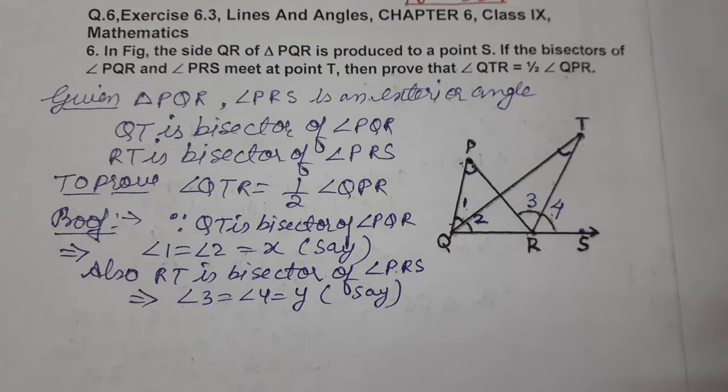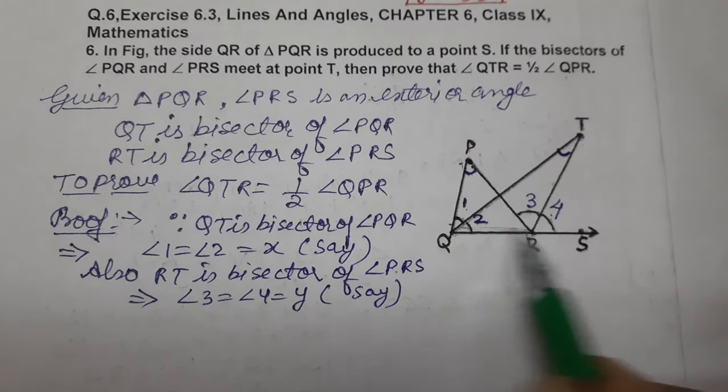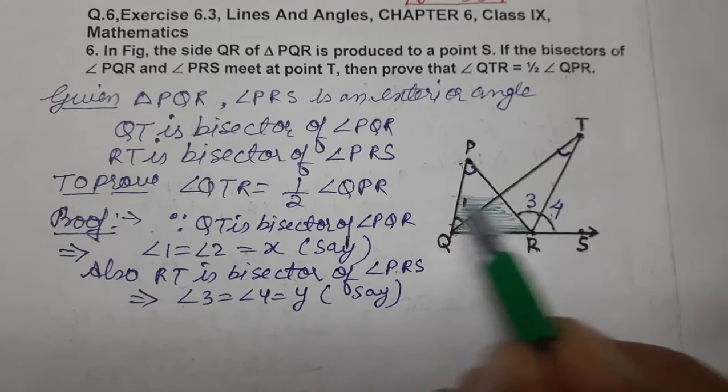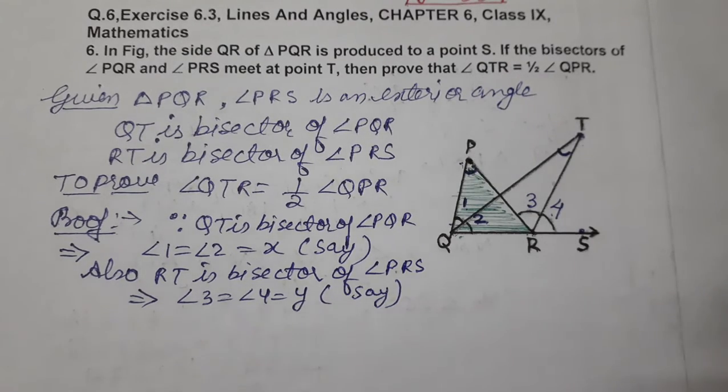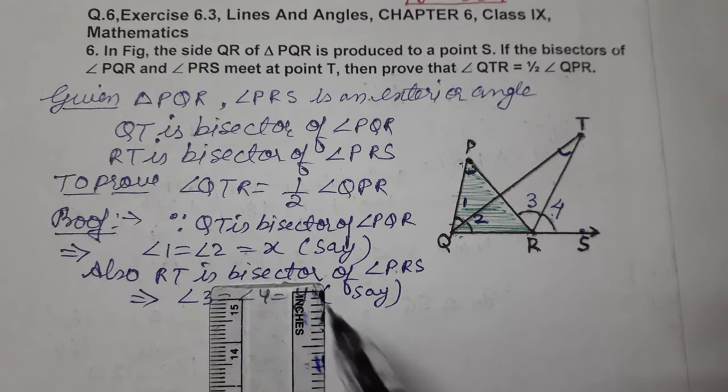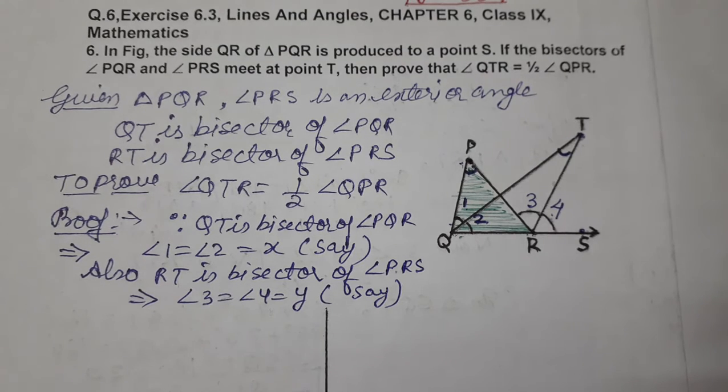Now, let's consider the external angle property. In triangle PQR, we'll use the exterior angle property. An exterior angle of a triangle equals the sum of its interior opposite angles. So we'll write the first part.